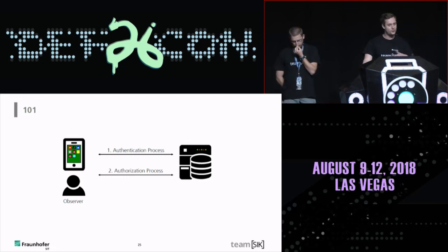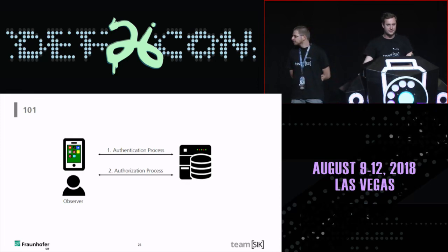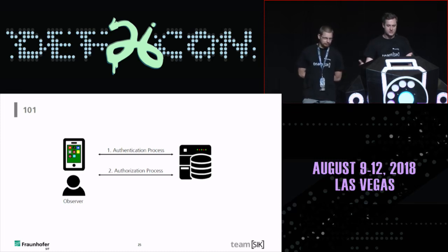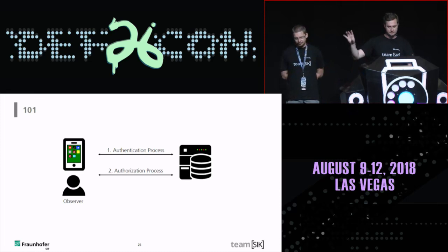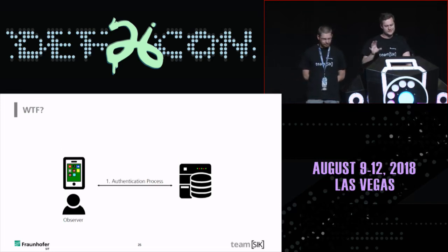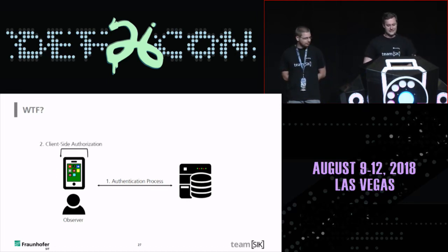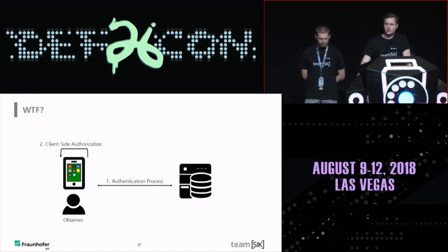Before we start, just to be clear about what it means to access sensitive data: there are usually two steps — first authentication including identification, and then authorization checked on the backend to verify if you're allowed to access the data. What we saw was that the authentication process was most of the time broken, or absent. And then there was something we found called client-side authorization, which I'll explain with four examples.